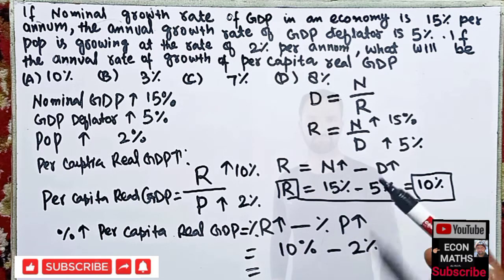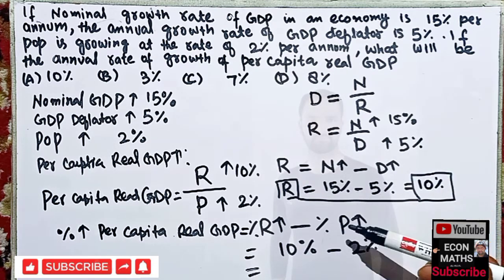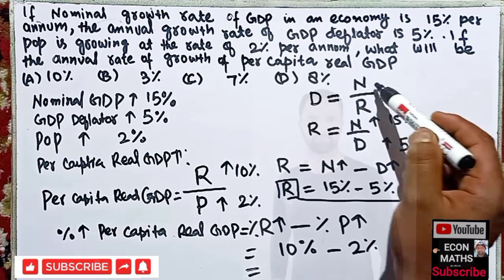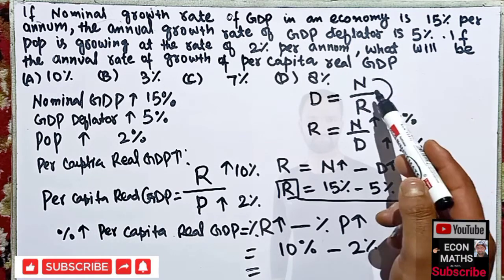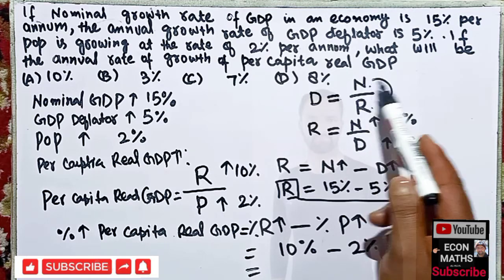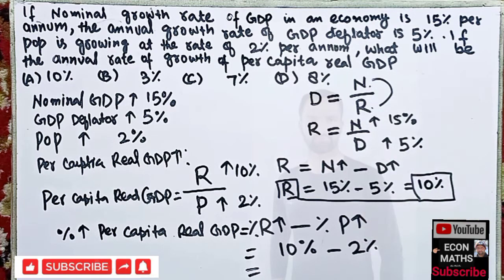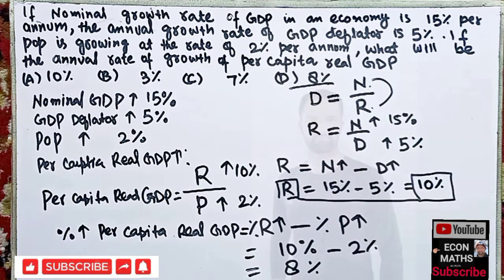In an earlier video I showed how we arrive at this result — how we simply subtract the denominator's growth rate from the numerator's growth rate to get the percent increase. So 10 percent minus 2 percent equals 8 percent. The correct answer is 8 percent. I hope I made myself clear. Thank you.